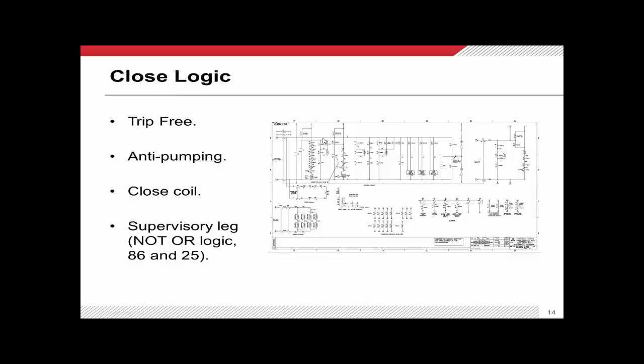The close coil is located here — that squiggly line — and all of these features above it, which are NOT-or logic, are the things that supervise closing. These are all the features that, if not in the correct state, mean we do not want to close this circuit breaker. If you take this lead out to your substation control building, a couple more things will be added in the next class — specifically ANSI numbers 86 and 25 — to prevent closing if they're not in the proper state.